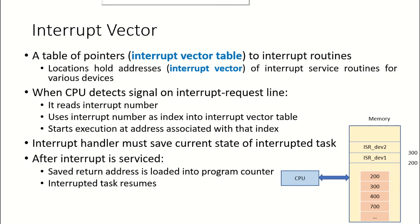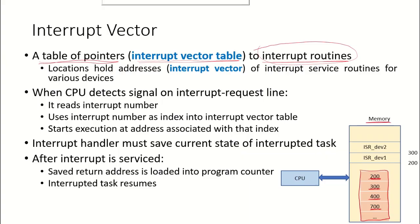Now let us see how the interrupt service routines are stored in memory and how they are accessed. There is a table of pointers referred to as the interrupt vector table. This table of pointers points to the interrupt routines — these are programs or software modules which handle the particular kind of interrupt that has been received. So in memory, the interrupt vector table maintains interrupt vectors, storing the addresses of the different interrupt service routines. For example, at address 200 there is an interrupt service routine for a particular kind of device.